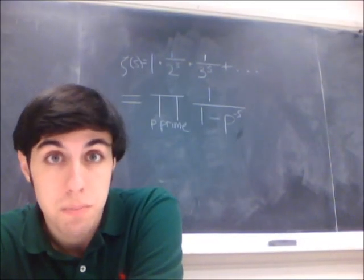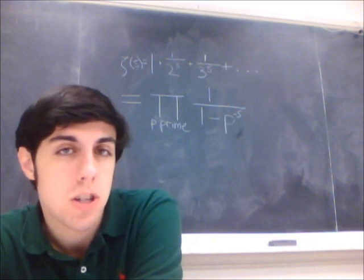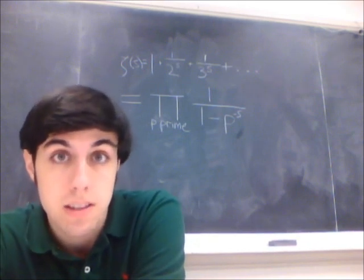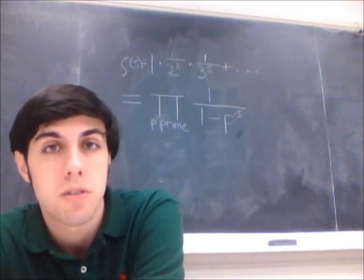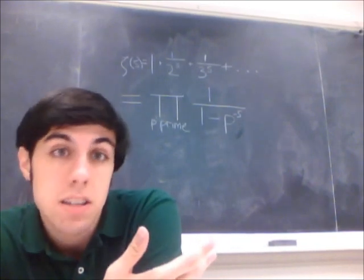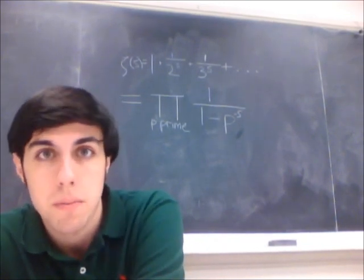This is a really neat result because this Riemann zeta function is the same function that is in the Riemann hypothesis, which is known to be linked with the distribution of primes. So here we can see that indeed there is a link between the zeta function and prime numbers.